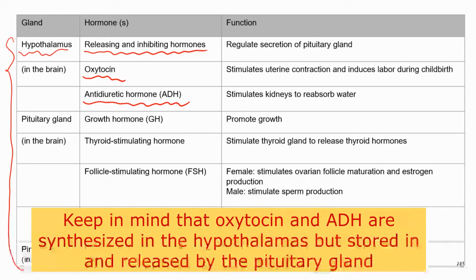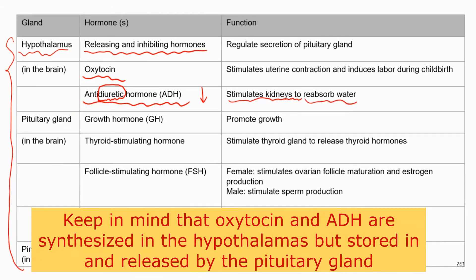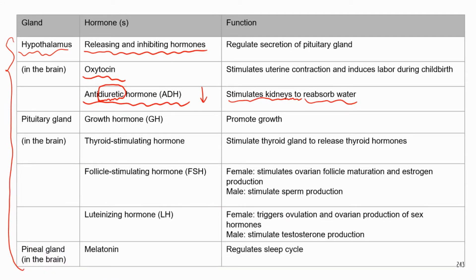The hypothalamus also secretes antidiuretic hormone, or ADH. A diuretic increases urine production, so antidiuretic means this hormone decreases urine production. ADH stimulates the kidneys to reabsorb water, so less water ends up in urine, decreasing the volume of urine produced.